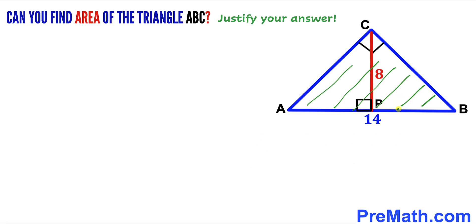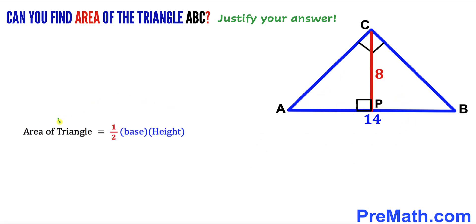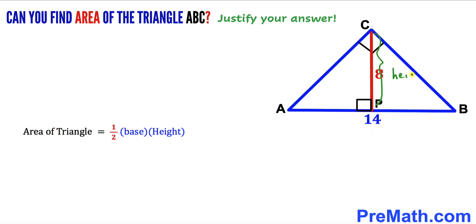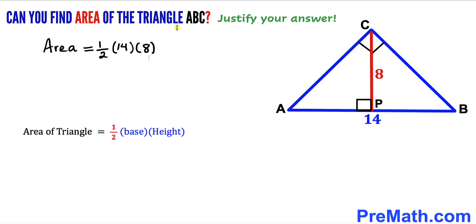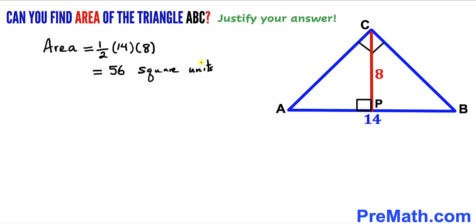Since we are interested in calculating the area of triangle ABC, let's recall the area of a triangle formula: area equals one-half times base times height. In our case the base is 14 and the height is 8 units, so the area equals one-half times 14 times 8, which gives us 56 square units.